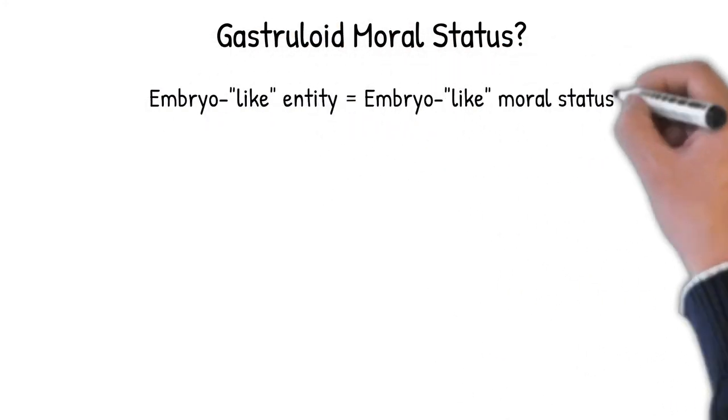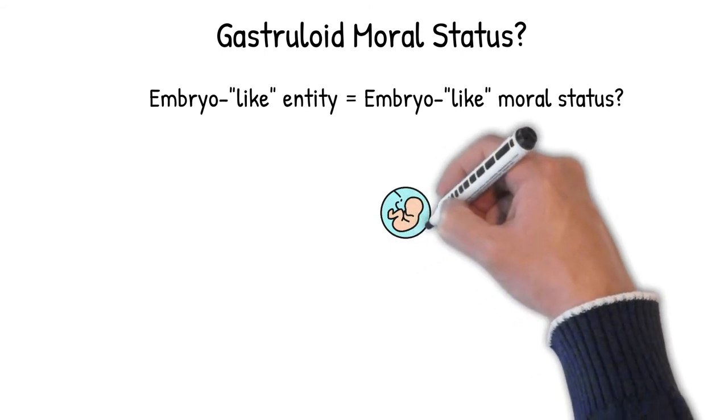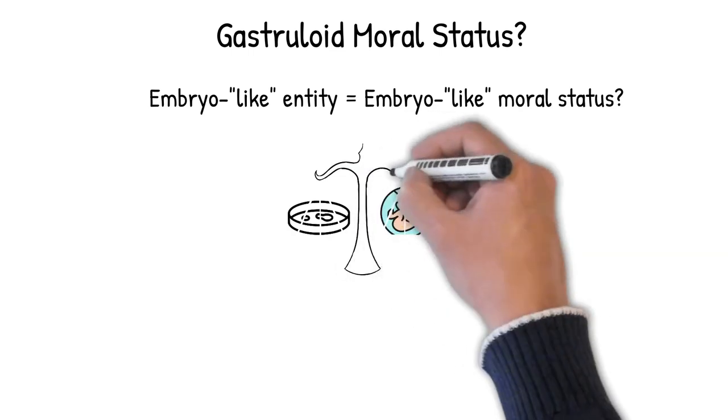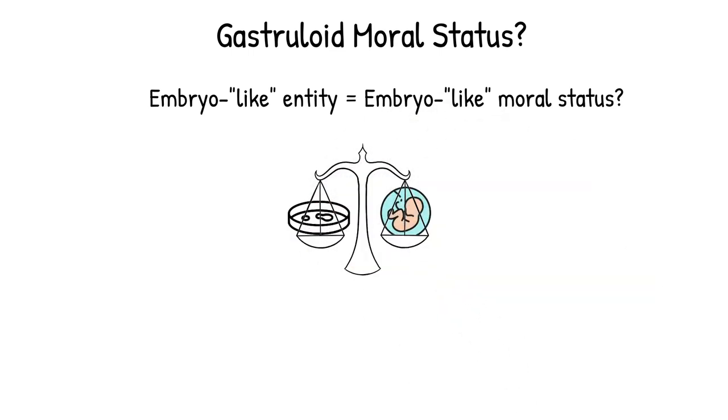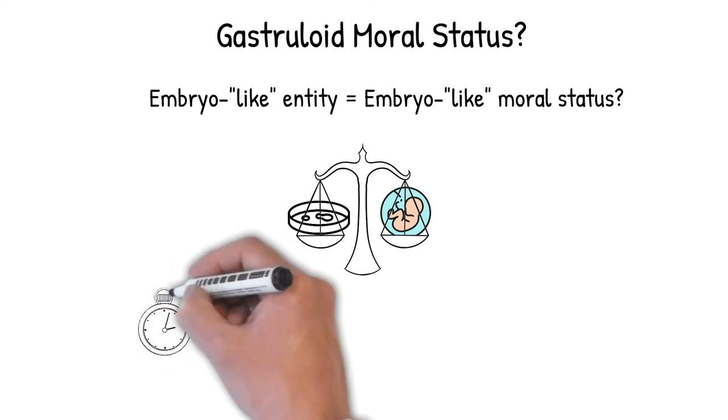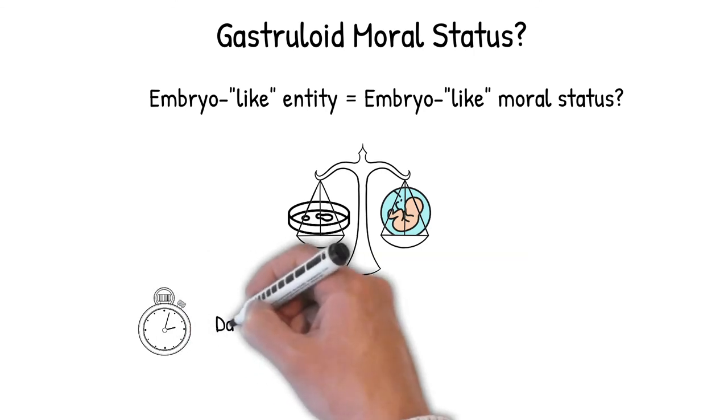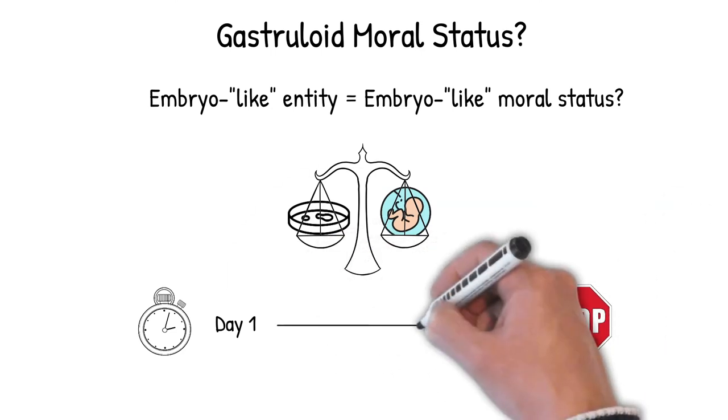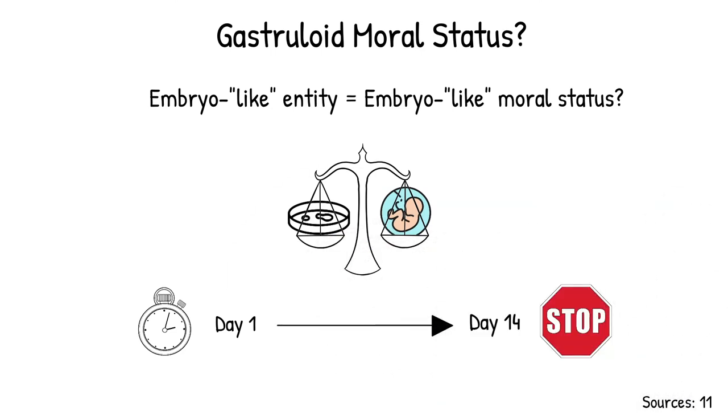Now, turning to gastruloids, they also have unique challenges to their moral status. A gastruloid models embryonic gastrulation, a later stage in the formation of the embryo. While gastruloids are not viable like typical human embryos, the close resemblance of the model may require a higher degree of moral consideration. Gastruloids may raise questions about the need to revisit the 14-day rule. This rule allows researchers to develop a human embryo in vitro for 14 days until the appearance of a primitive streak.